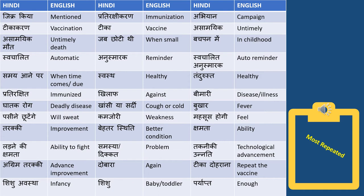'Kamzori' means weakness. 'Mehsus hogi' means to feel — 'unhay kamzori mehsus hogi' means they will feel weak. 'Tarakki' means improvement, and 'behter' also means better or improved. For example, to improve someone's condition you say 'behter banana.' 'Isthiti mein tarakki hui hai' means there has been an improvement in his condition. 'Behter sthiti' means better condition.